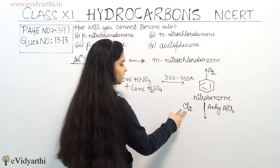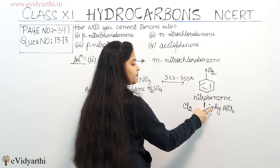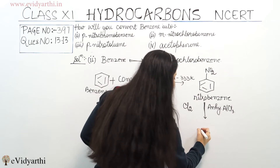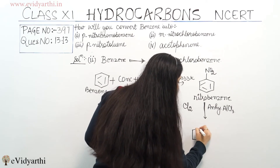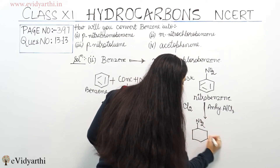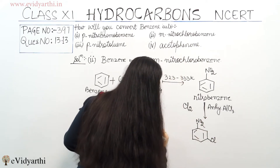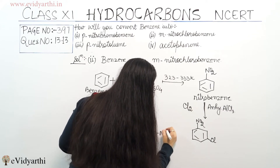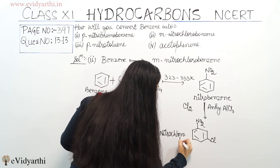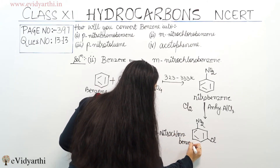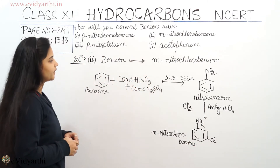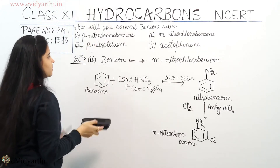Now I will treat nitro-benzene with chlorine in the presence of anhydrous aluminium chloride (AlCl₃). This gives me meta-nitro-chloro-benzene. This is the conversion of benzene into meta-nitro-chloro-benzene.